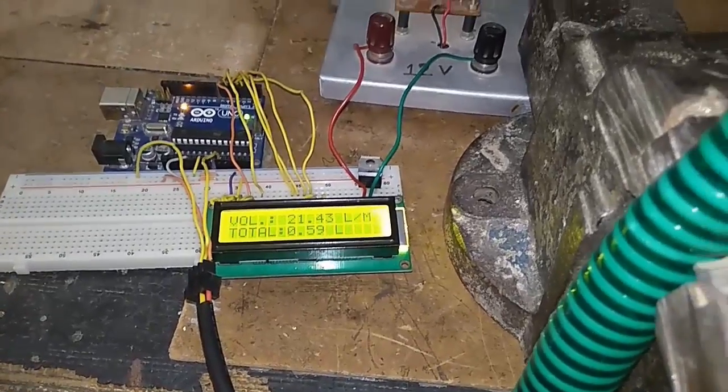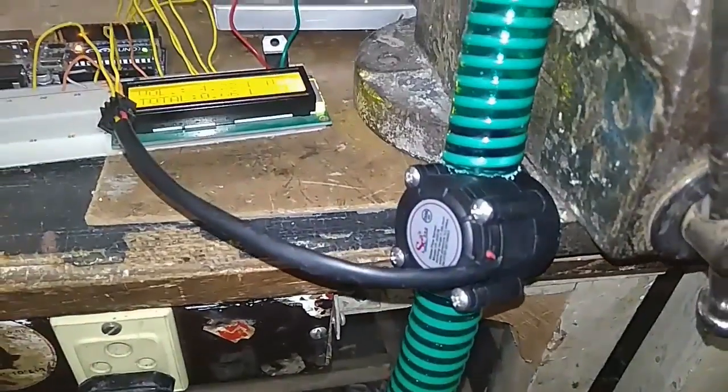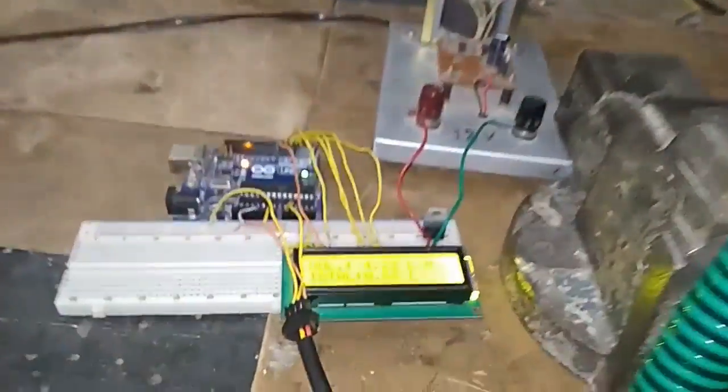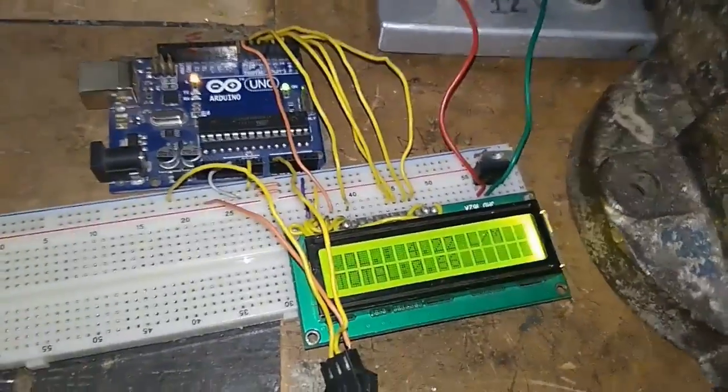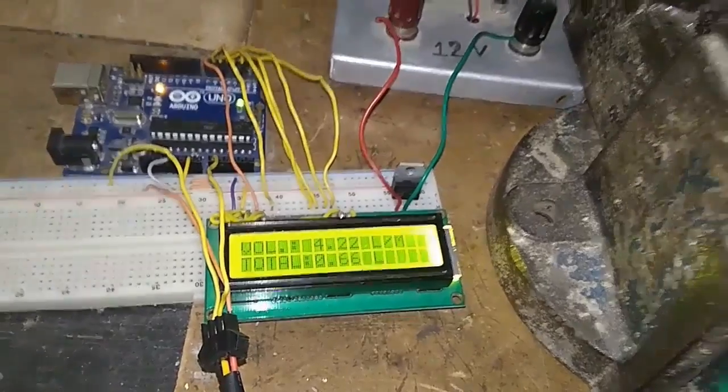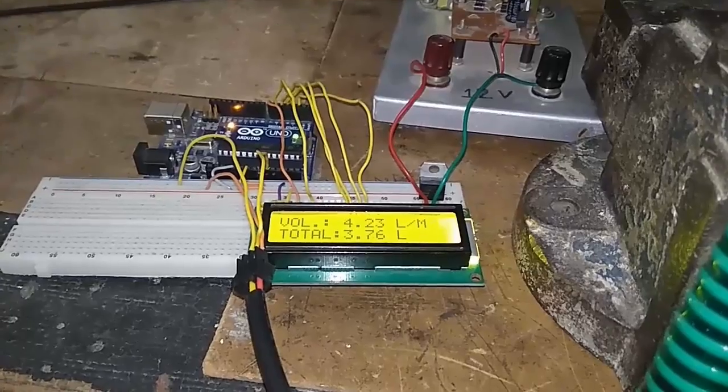I have simply dropped water at the top portion and it is flowing through the water flow sensor. You can see the flow rate is 4.22 liters per minute and total water flow is 4.66 liters. You can see the rise or decrease in the value.